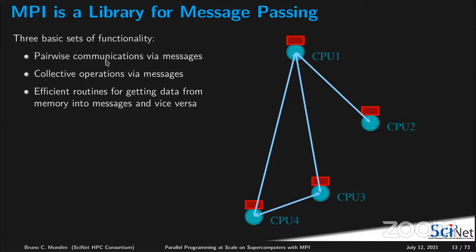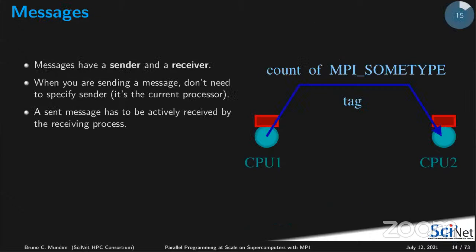The MPI library has three basic sets of functionality. First, pairwise communications — one task running on one CPU sends a message to another task, a point-to-point pair communicating. Second, collective operations — instead of just two tasks, all members of a communicator participate. Third, efficient routines to get data from memory into messages and vice versa, which is useful both for sending messages between computers and for writing those messages to disk efficiently for I/O.